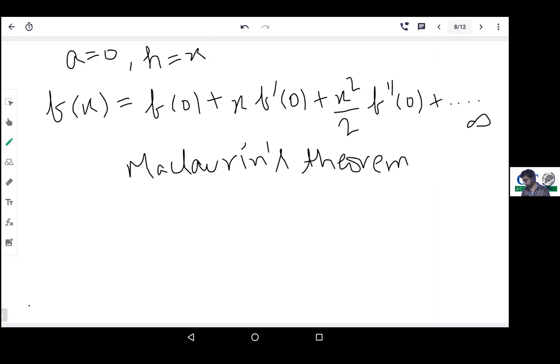For example, if you take f(x) as sin(x), sin(x) will equal first f(0), which is sin(0). What will sin(0) be? It will be 0 plus x into f'(0). The first derivative of sin(x) is cos(x), so cos(0), which equals 1.